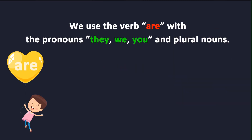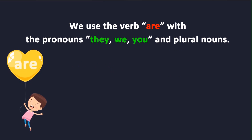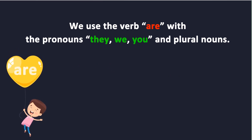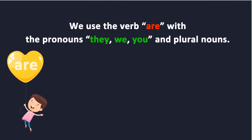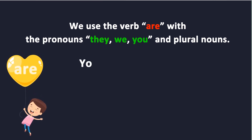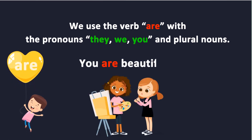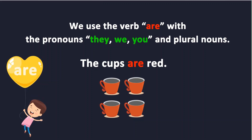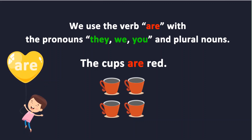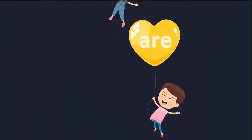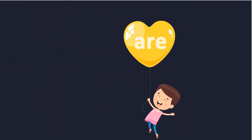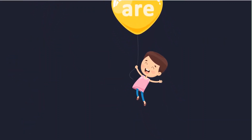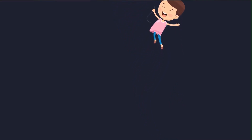We use the verb are with the pronouns they, we, you, and plural nouns. For example, you are beautiful. The cups are red. We learned that we use the verb are with plural nouns and pronouns.